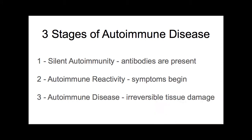Stage three is where you're able to be diagnosed with an autoimmune disease and you have irreversible tissue damage. In the case of a thyroid, your TSH has risen enough that you're diagnosed hypothyroid and you go on thyroid replacement hormone. Let me give two better examples to illustrate these three stages. First: rheumatoid arthritis. In stage one, you have antibodies present but you feel fine. You'd very rarely find out because they're never going to test for antibodies unless you have symptoms.